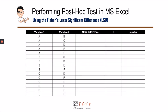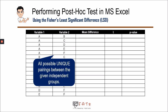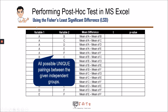The objective in performing post hoc tests is to accomplish a five-column table. The first two columns refer to all possible unique pairings between the different independent groups. The third column is the mean difference, which is the mean of the first group minus the mean of the second group. For the first row, we subtract the mean of A by the mean of B, giving mean A minus mean B. Similarly, mean A minus mean C, and so on.